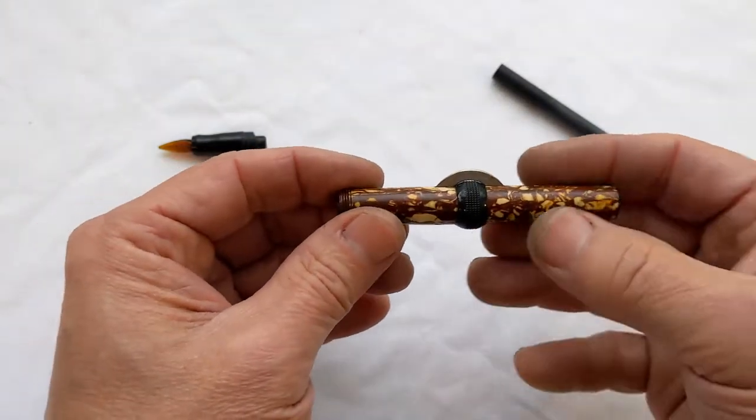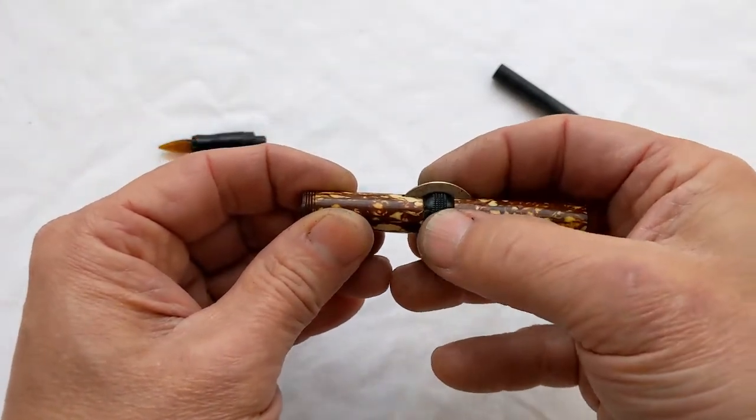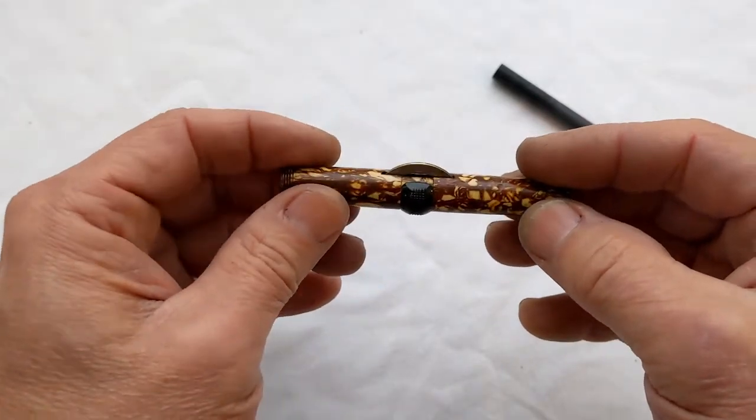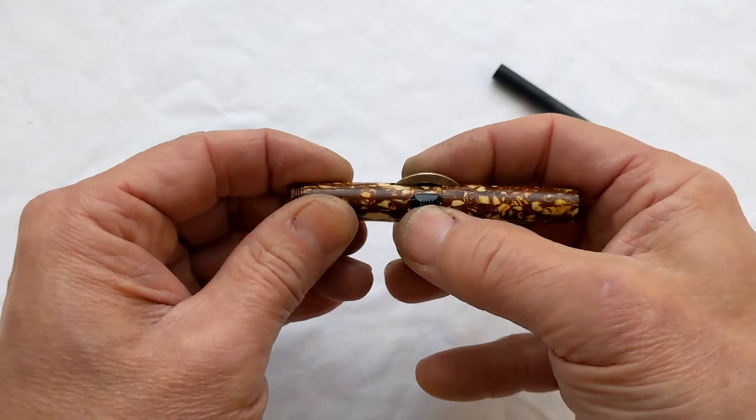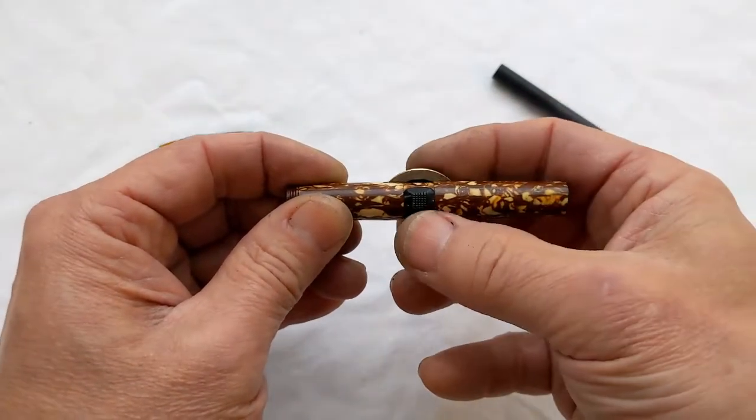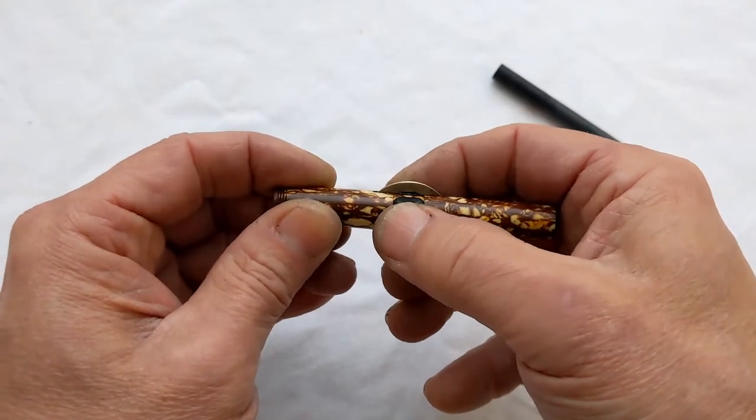What happens also is this is a Conklin style crescent filler. And what happens is it doesn't support the crescent in the correct position because it's so small. So when you try to work it, it kind of jams. It sits too low.